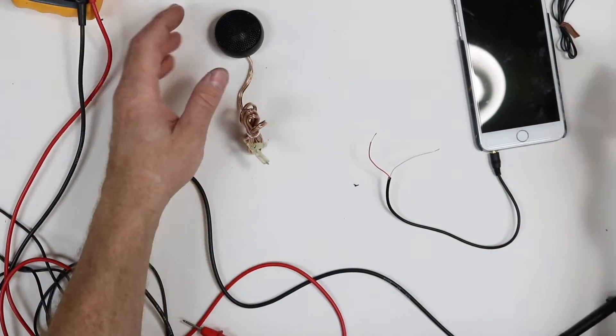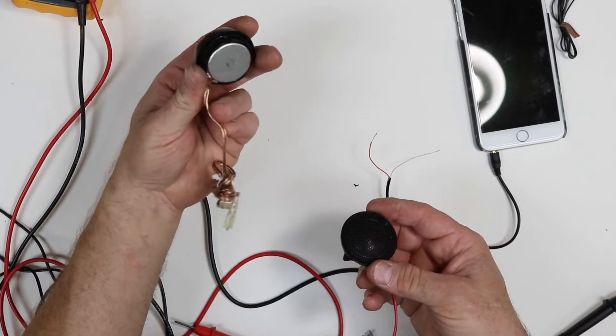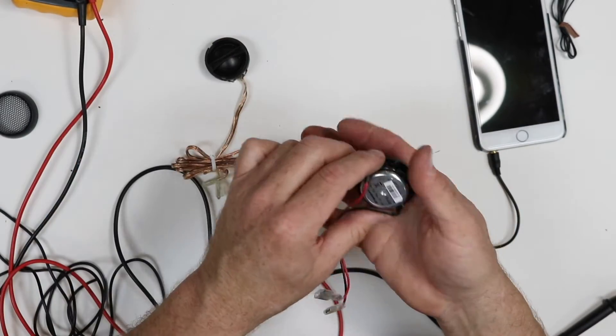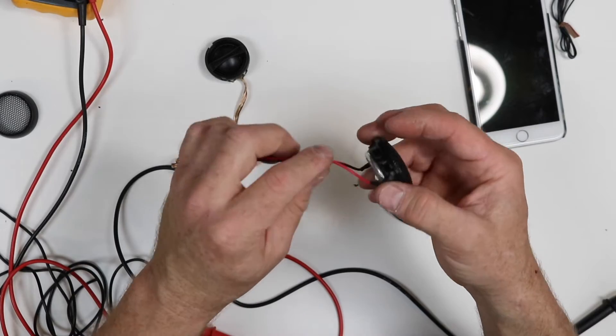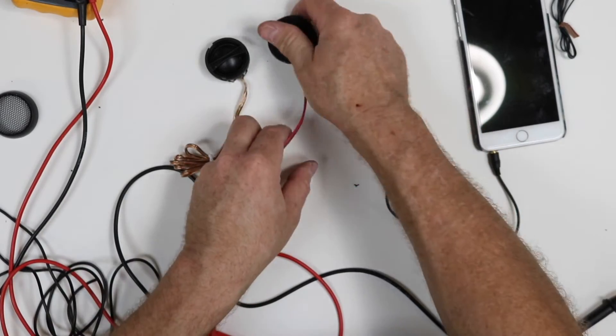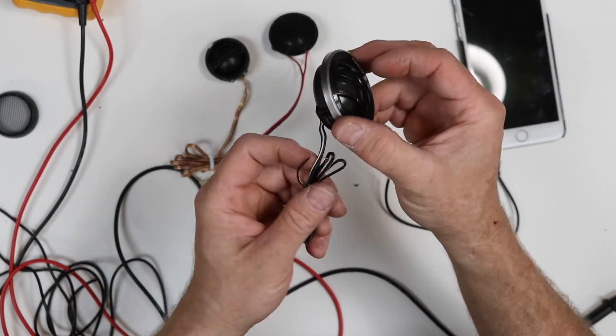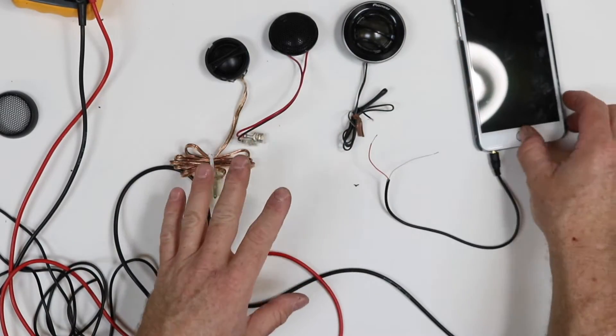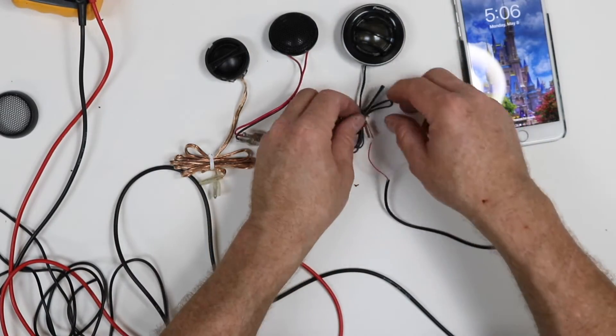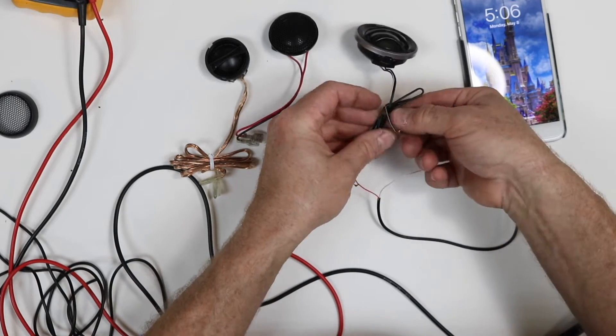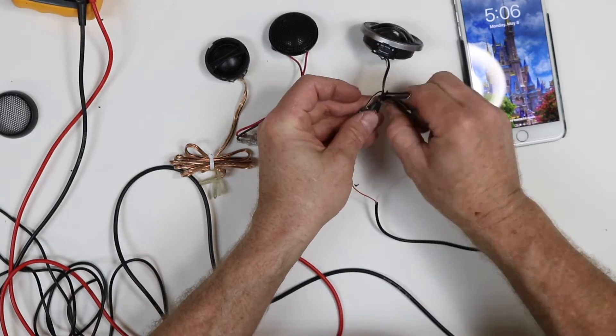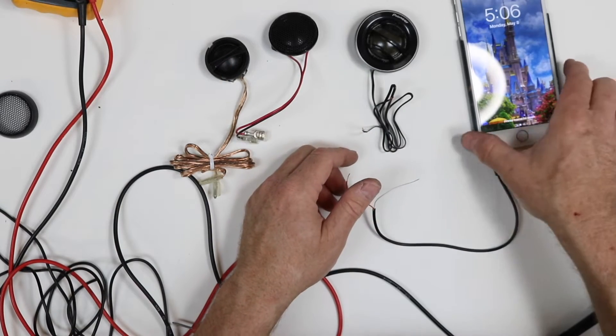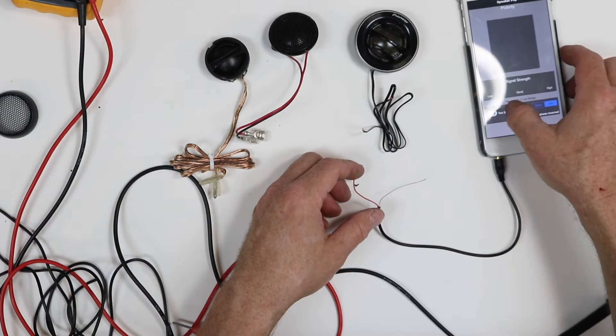Now, we have three different tweeters here. We have this Alpine tweeter here that is clearly not marked. We have a Rockford. They used red and black, mighty nice of them. Then we have a Pioneer that's actually marked. So we will be able to use this to test to see if we're getting the right thing. That way, when we're using something that isn't marked, like the Alpine, we're good to go. All right, so we'll go ahead and turn on our test tone.